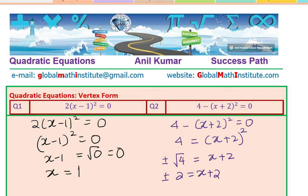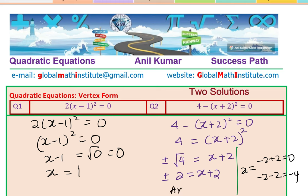So x plus 2 equals plus 2 or minus 2. That means x equals minus 2 plus 2, or minus 2 minus 2. Minus 2 plus 2 is 0, and minus 2 minus 2 is minus 4. So the two answers for this equation are x equals minus 4 or 0.